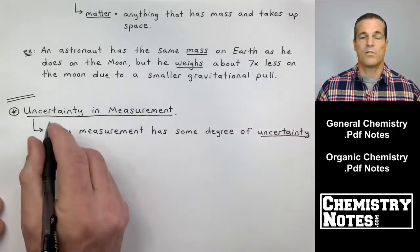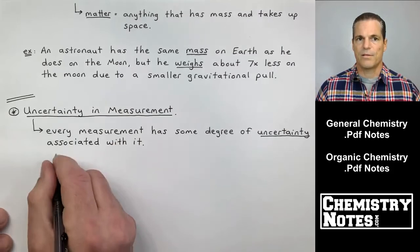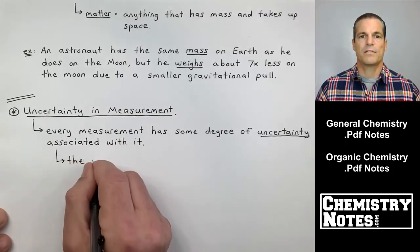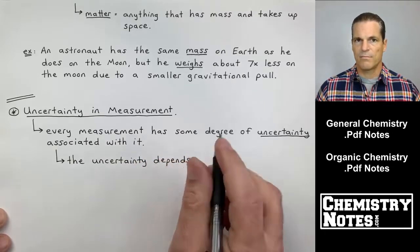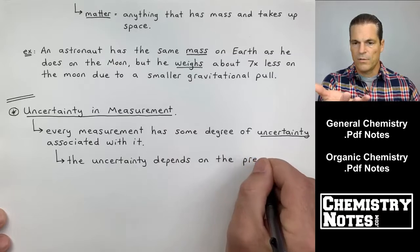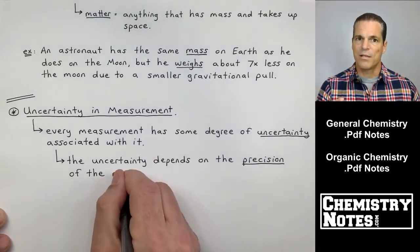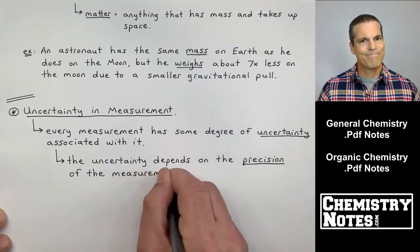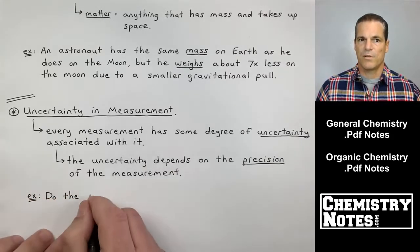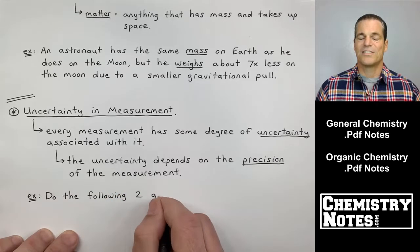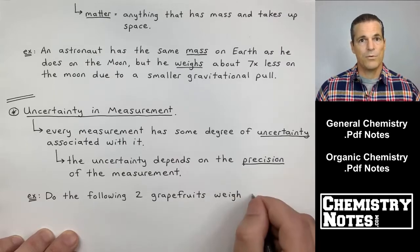And that next section is uncertainty in measurement. Let's get some notes down for uncertainty in measurement. Every measurement has some degree of uncertainty associated with it. I'm measuring something, I'm not counting. If I count five apples in my hand, one, two, three, four, five apples, no uncertainty there. I'm not counting, I'm measuring. Anytime you measure something, there's a little bit of uncertainty involved. Every measurement has some degree of uncertainty associated with it. The uncertainty depends on the precision of the measurement or even the precision of the instrument being used to do the measuring.